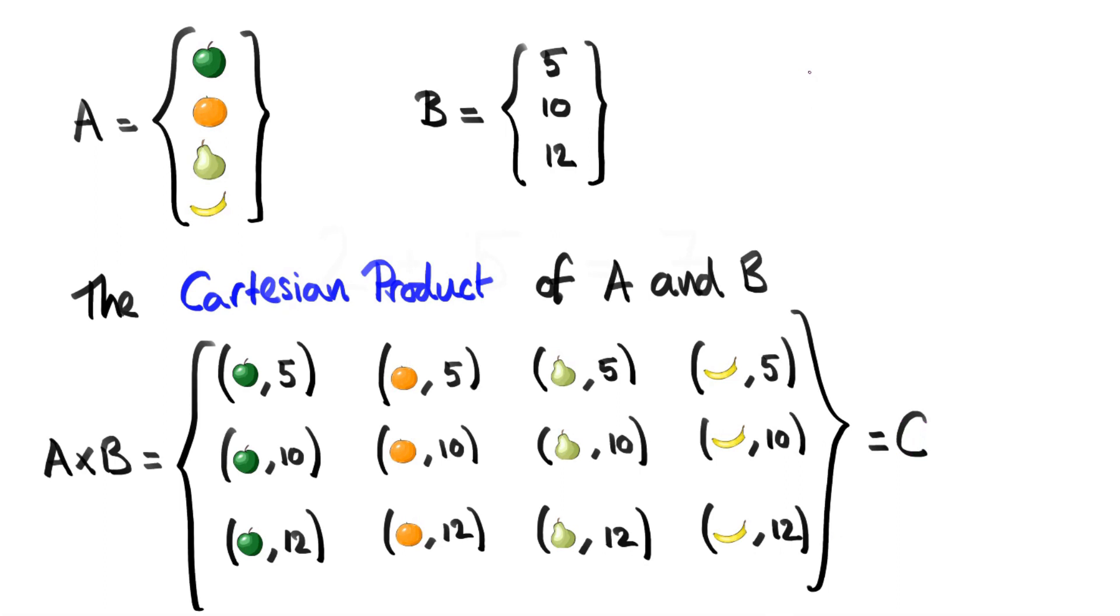And one final thing about the set A cross B is that we can see that there are 12 elements in A cross B. And the way that we produce this set should make it clear that for each element of A we have three different choices, and these three different choices come from the elements of B. So we can see that because there are four different elements in A and three different elements in B, then the size of A cross B is going to be 4 times 3. So the size of A cross B is equal to the size of A times the size of B.